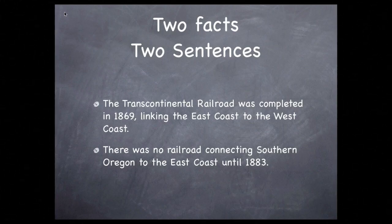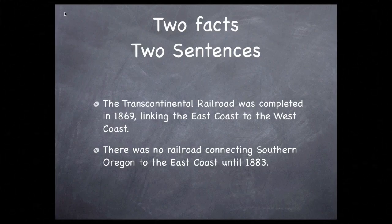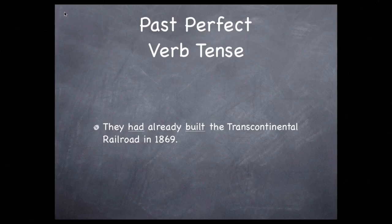For the first sentence to show that this is a condition that existed before the second one, we're going to have to use the verb in the past perfect tense. The term 'perfect,' as used here, simply means that something already happened in the past and it stopped happening — it's finished, like the Transcontinental Railroad. So they had already built the Transcontinental Railroad in 1869. The two words, 'had built,' make up the verb in this sentence. Both words are needed for the past perfect tense.